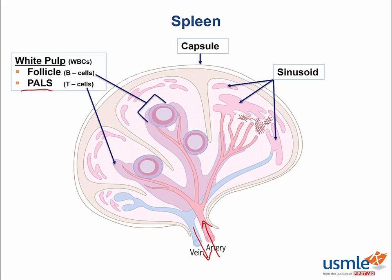Blood eventually trickles into the red pulp where macrophages mechanically filter out senescent RBCs, cellular inclusions, and pathogens. Bacteria with capsules are normally destroyed by the IgM released from the spleen.